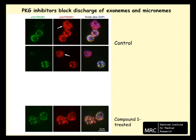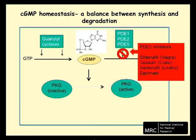If inhibitors of PKG inhibit discharge of SUB1 into the parasitophorous vacuole, this may be the means by which they prevent egress. PKG is activated by the cyclic nucleotide cyclic GMP, and cyclic GMP levels themselves are regulated by the interplay between guanylyl cyclases, which synthesize cyclic GMP, and phosphodiesterases, which degrade cyclic GMP.